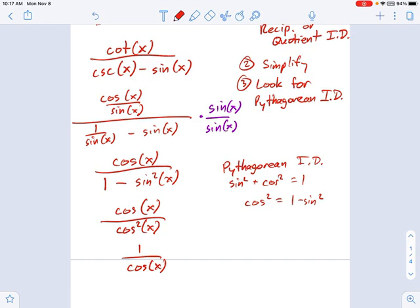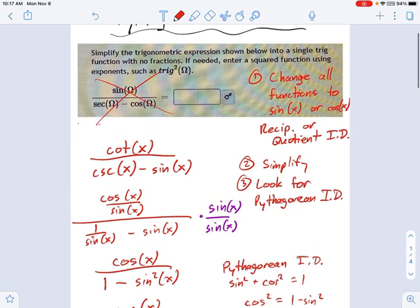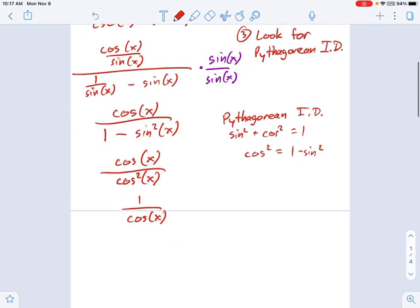You might think that's about as far as we can go, but remember what it said. It said with no fractions. So I need one more step. I need to remember that according to the reciprocal identity, this is equal to secant of x. And that would be my final answer. It's a single trig function with no fractions.